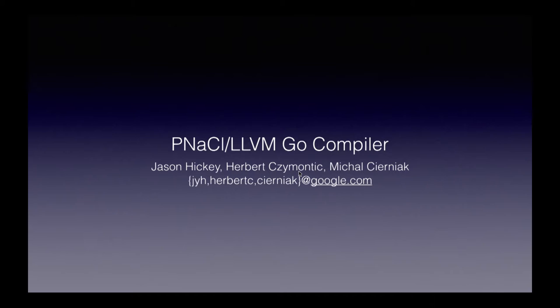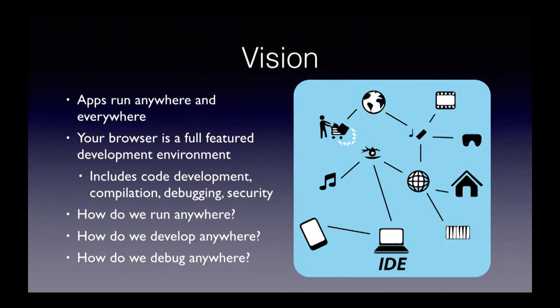I'd like to talk about a Go compiler that we're building, but let me talk about the vision first. I work in an Internet of Things project, and what we would like is for you to be able to run anything, anywhere — to develop as well as run your code, debug it, run it on your laptop, your phone, your refrigerator, your toaster — all these different kinds of devices.